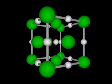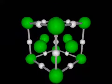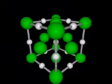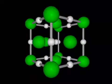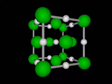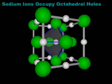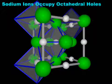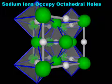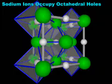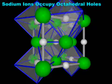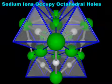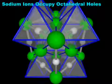Halite is the mineral name for sodium chloride. In the halite structure, the relatively large chloride ions, represented by the green spheres, form a face-centered cubic array. The sodium ions, represented by the white spheres, occupy the octahedral holes. Each sodium ion lies at the center of an octahedron of chloride ions. Since an array of N close-packed atoms gives N octahedral holes, and since there is one sodium ion for every one chloride ion, all of the octahedral holes are occupied. In contrast, the tetrahedral holes are vacant.